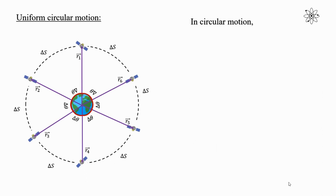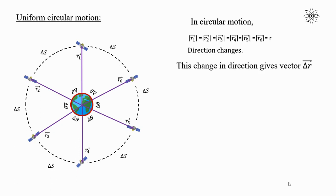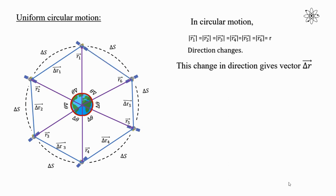In a circular motion, the magnitude of the radius vector is constant, but its direction changes. This change in direction gives the vector delta r. The change in direction of radius vectors r1 and r2 is given by the vector delta r1. Similarly, other such vectors can be drawn. This rate of change of delta r — that is, the change in direction of the radius vector — gives velocity. The average velocity is equal to vector delta r divided by delta t.